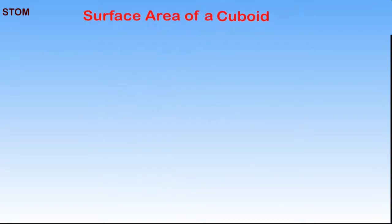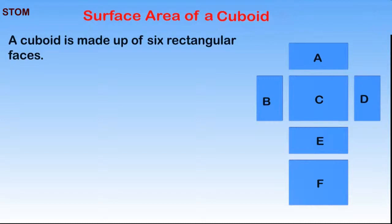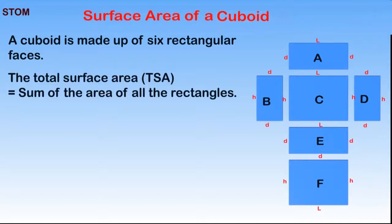To calculate the surface area of a cuboid, we have to bear in mind that since it has six faces, the total surface area will be the sum of all the areas of the rectangles. Let's take note that the area of a rectangle is length multiplied by breadth.